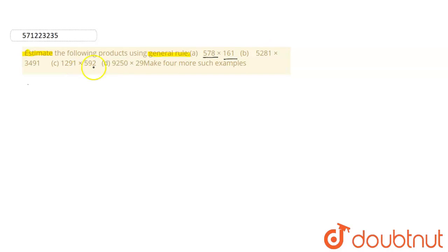Let's solve the first part. In our first part, we have 578 multiplied by 161. Let's round off these values. 578 would be equal to 600, and 161 will be 200. In the next step, we have to multiply these. So the final result would be 120,000. This is the estimated product.